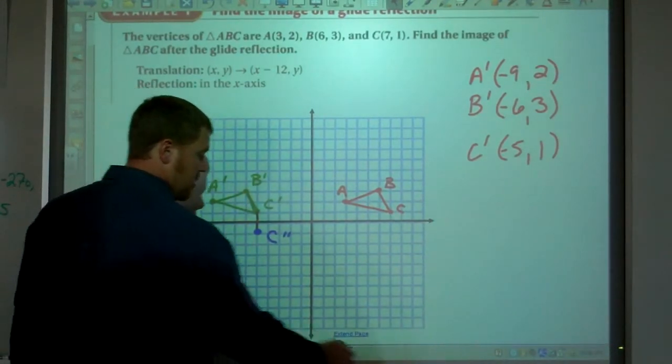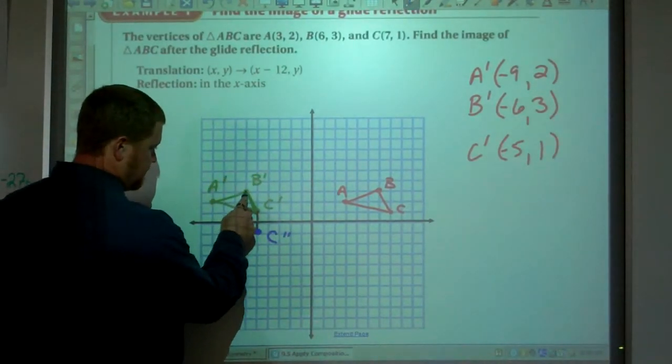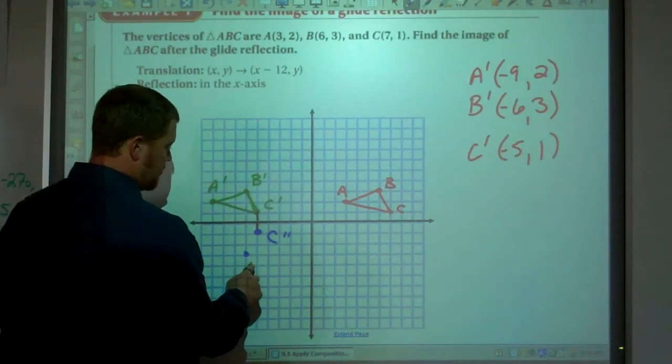B is 3 away. So B double prime should be on this vertical line, 3 away. There's B double prime.